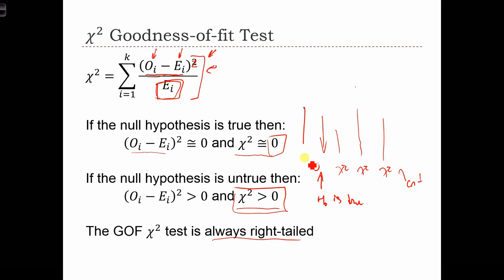So imagine this is the chi-squared. The p-value of this chi-squared is the area to the right. And remember, this is the p-value.